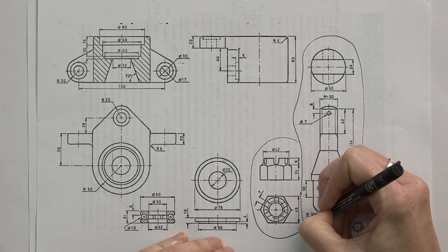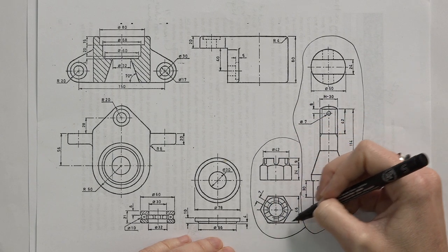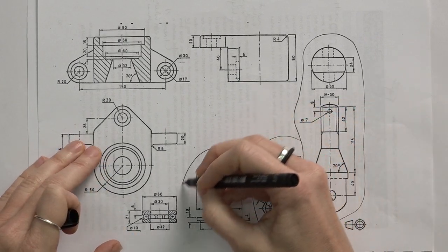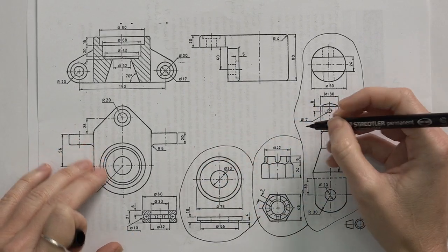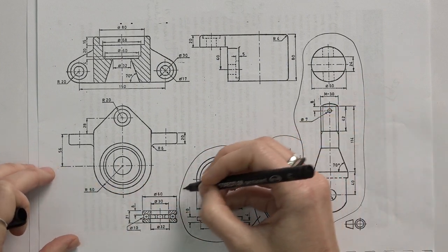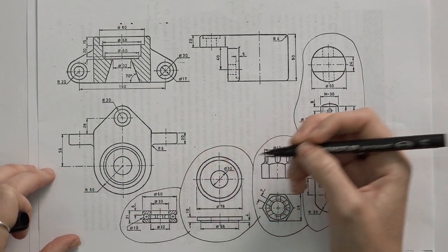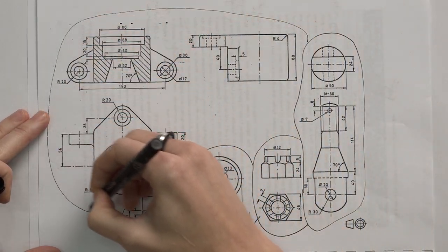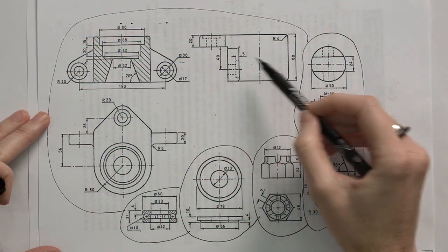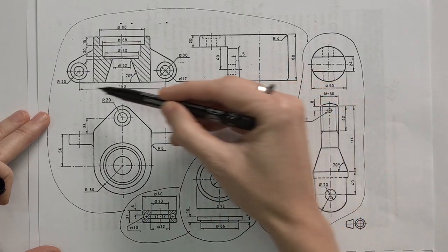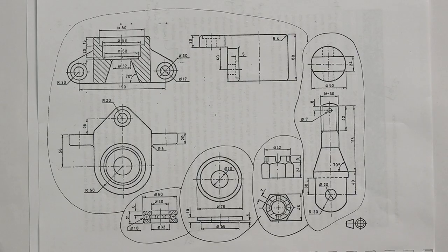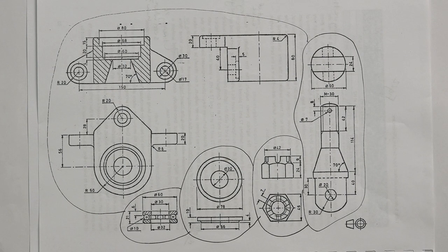Then we have this, which we can identify as a castle nut from our standard components. We have these two that are together. We have this bearing, also identified from standard components. And then we have these three views that show us three views of a single component. And you can see they all line up orthographically. So that's the first step. We identify how many components we have.